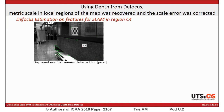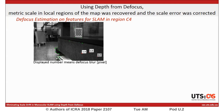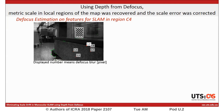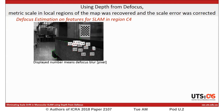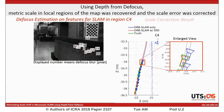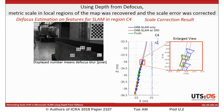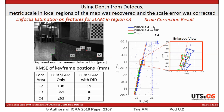This is the keyframes around the local region C4. The asterisk shows the features used in SLAM, and the numbers indicate the amount of defocus blur on the features. In this map, the blue line shows the camera trajectory from ORB-SLAM only, the red line shows the result of the proposed method, and the green line shows the ground truth. As you can see, our method was able to improve the accuracy of ORB-SLAM.